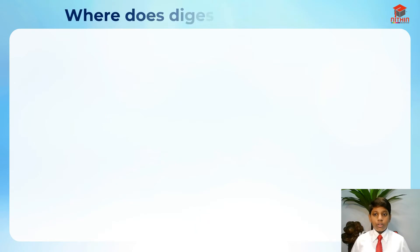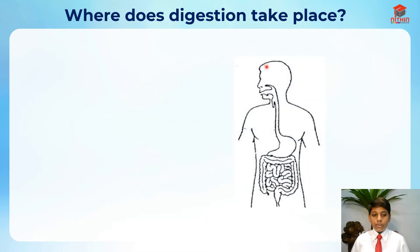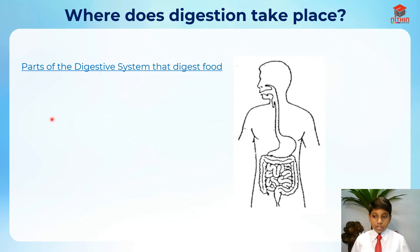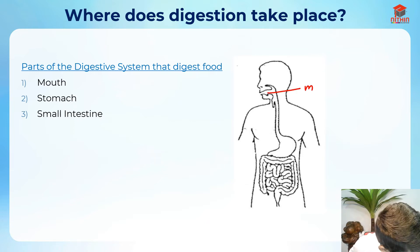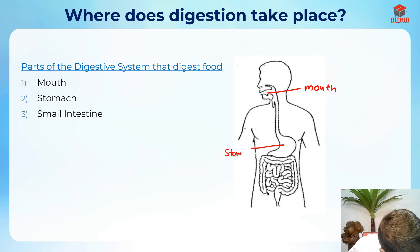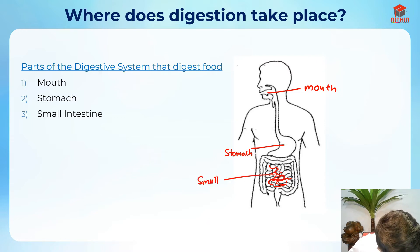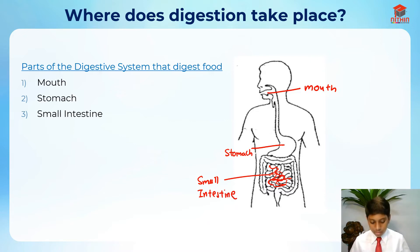The first question: where does digestion take place? The parts of the digestive system that digest food — there are three parts: the mouth, the stomach, and the small intestine. Here's the mouth, here's the stomach, and all of this over here is the small intestine.